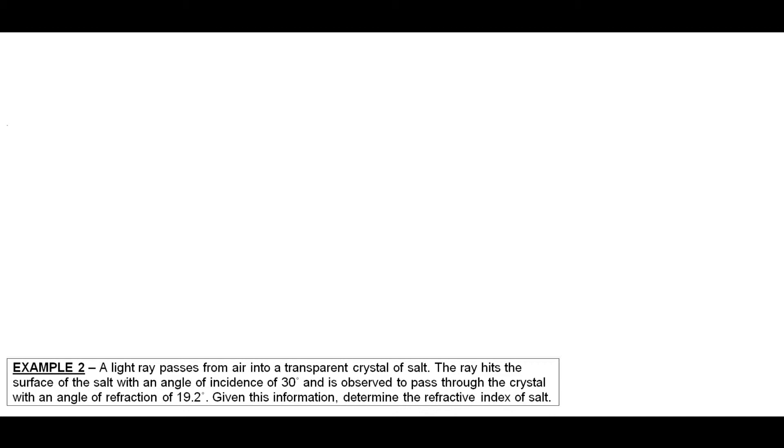Alright, now the next example is going to look at something a little bit different here. This time we're looking at the light ray passing from air into a transparent crystal of salt. Now this light ray hits the surface of the salt crystal at an angle of incidence of 30 degrees, and passes through with an angle of refraction of 19.2 degrees. So given this information, we're asked to calculate the refractive index of salt.